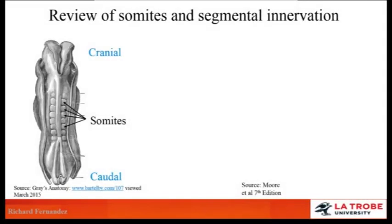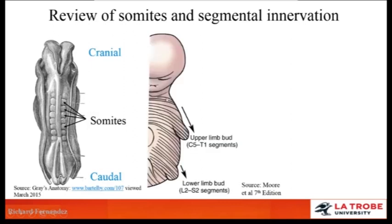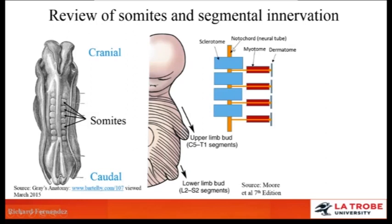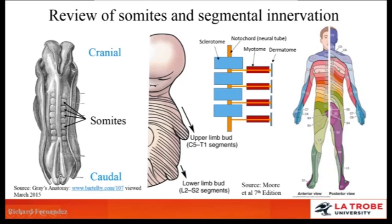We can now review the development of somites and their segmental innervation. Looking at a dorsal view of the developing embryo, we can see those somites stacked to form the trunk and extending into the limbs. The sclerotome forms bone, the myotome forms muscle, and the dermatome forms skin — all forming one segment from one somite. Axons from the spinal cord sprout out and supply that region. In the adult, one spinal segment supplies both the myotome and the dermatome, as demonstrated here with the T3 spinal segment.